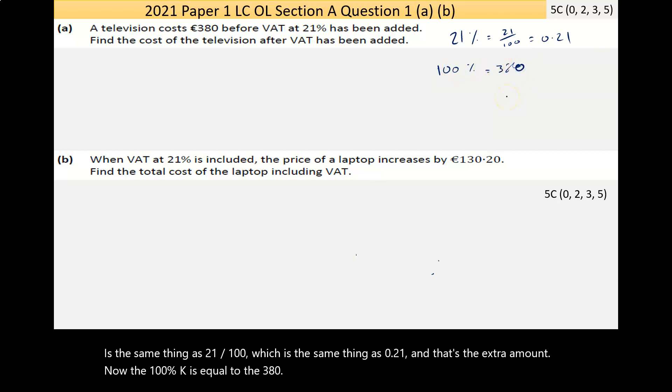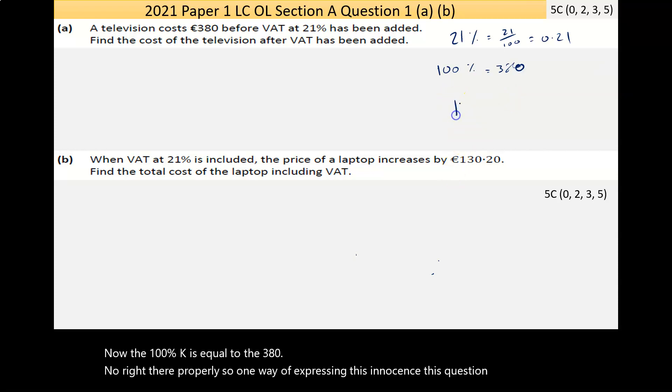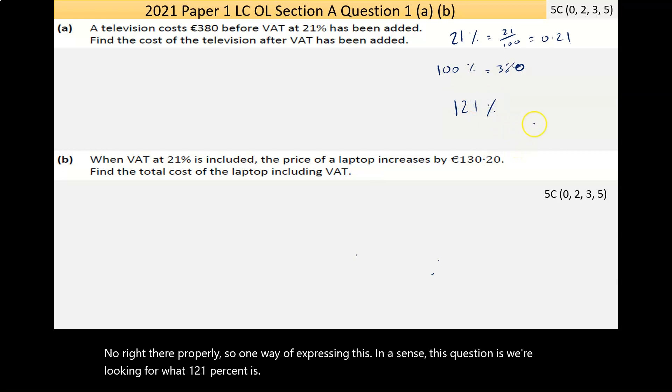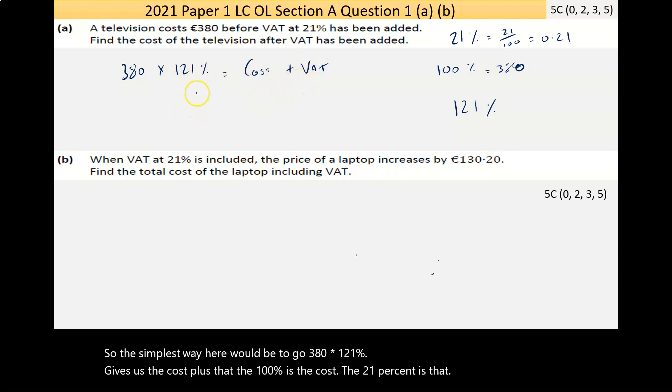In a sense, this question is we're looking for what 121% is. So the simplest way here would be to go €380 multiplied by 121%, which gives us the cost. The 100% is the cost, the 21% is the VAT. 121% is the same thing as 1.21, so you're basically multiplying €380 by 1.21.